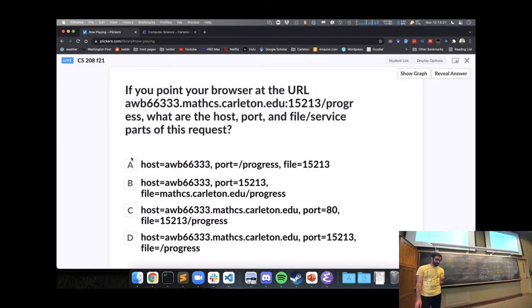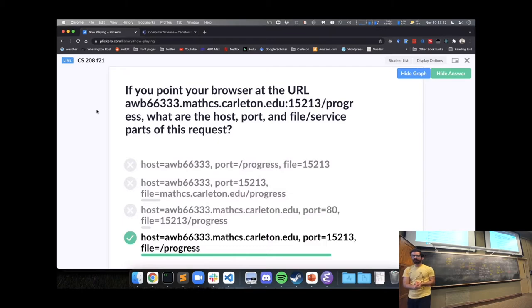All right. One practice on our web requests. If you were to point your browser at the URL awb6633.mases.carlson.edu, colon 15213, slash progress, which was our progress page for the BOM lab, how would that break down into host, port, and the file slash service parts of the request? And in this case, we have the right idea where our host is this full awb through carlton.edu, that's gonna turn into the IP address that we're connecting to. We have our port number, and then the slash is what starts our path or route to the thing we're requesting from the server. Any questions on that?